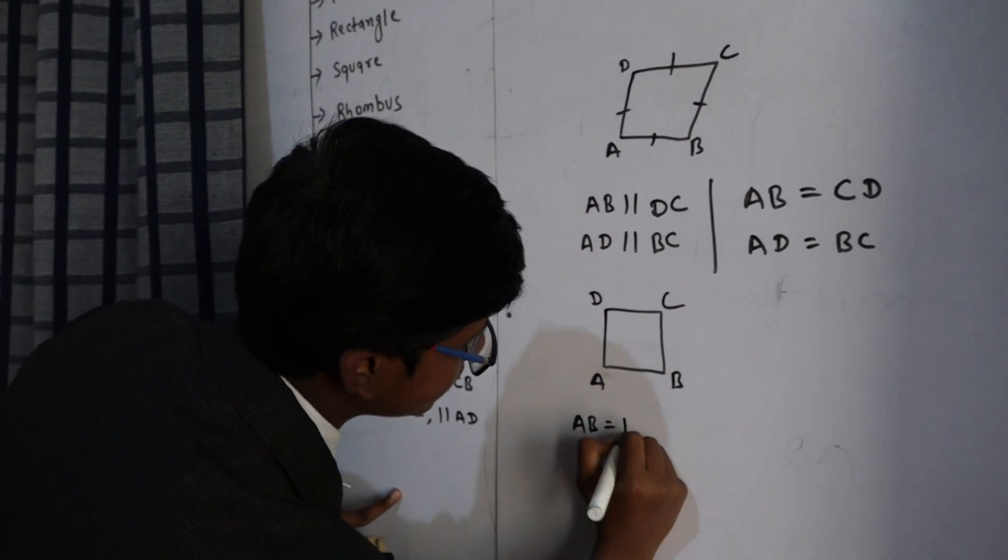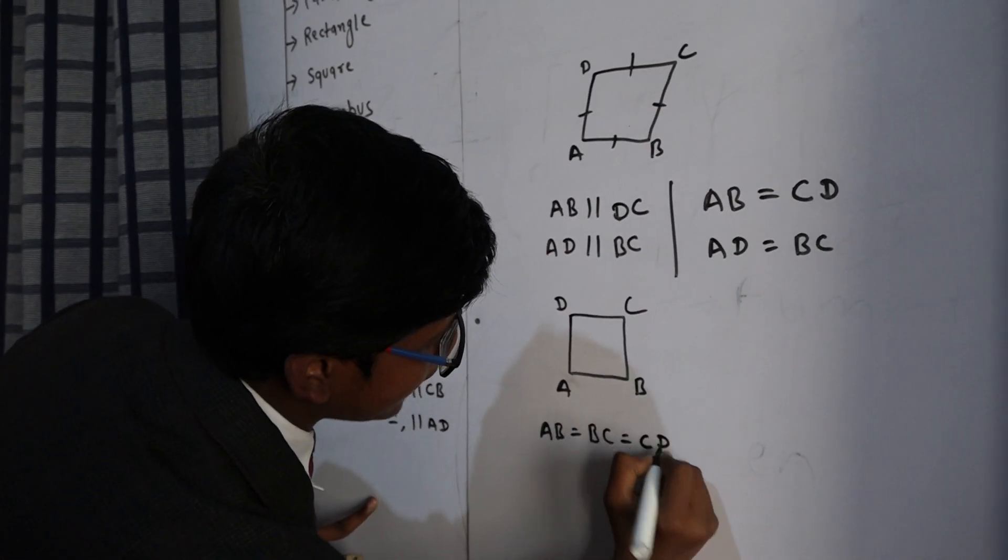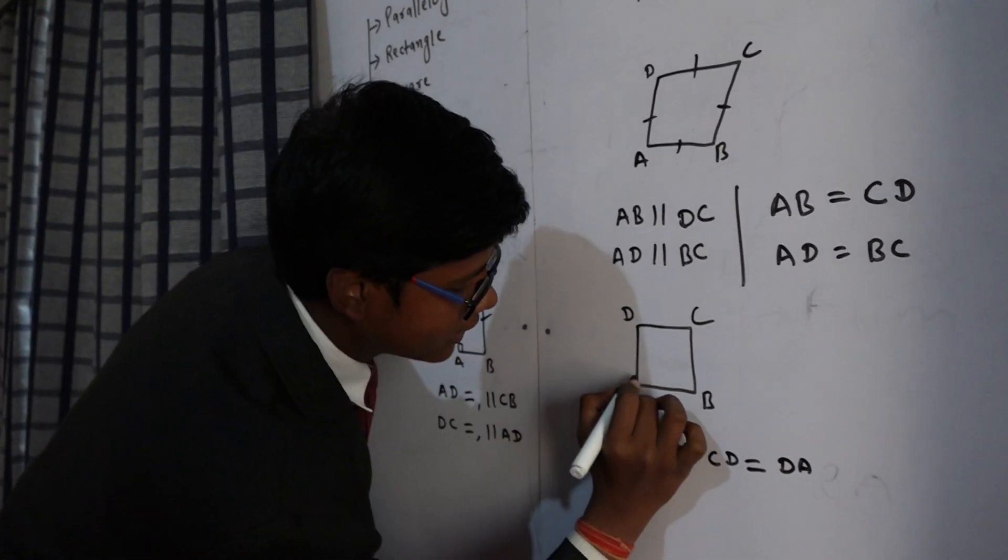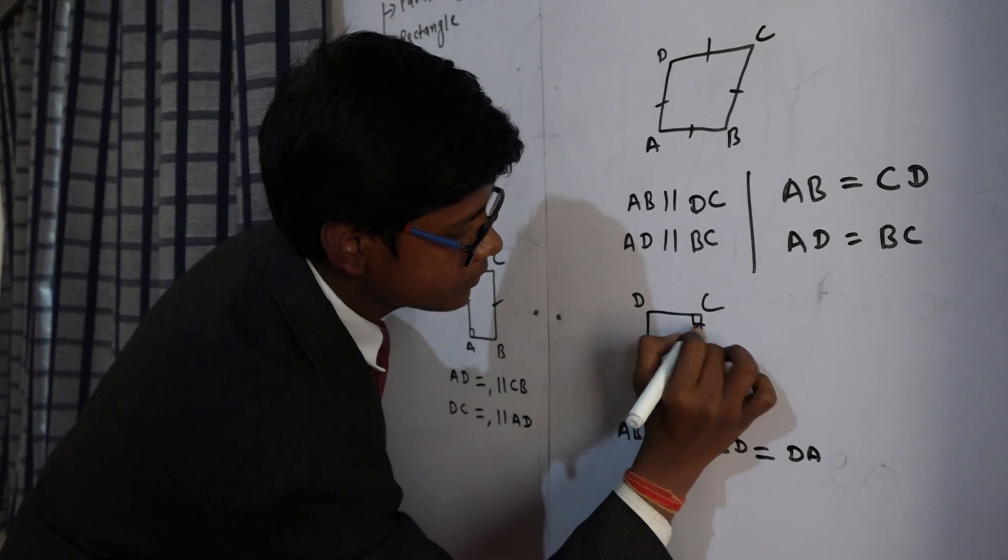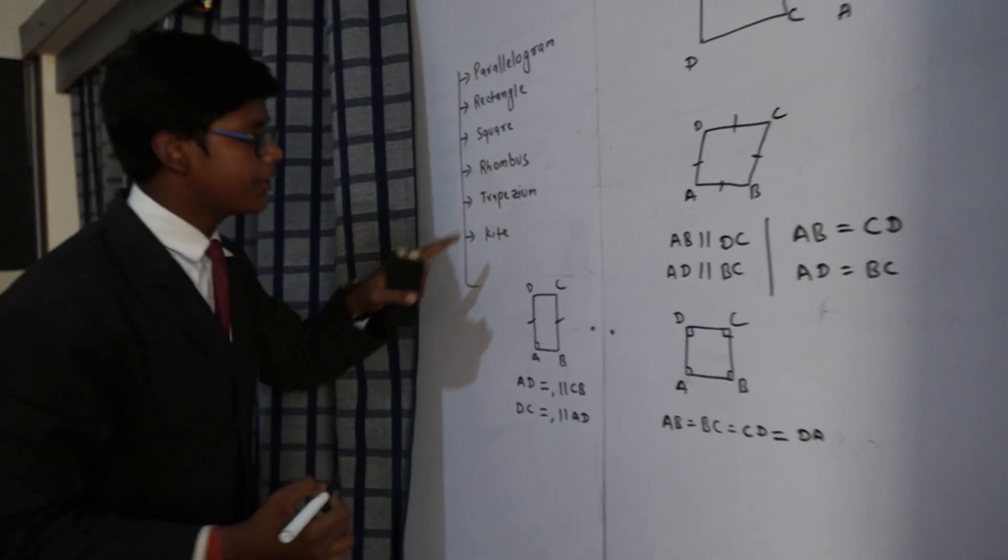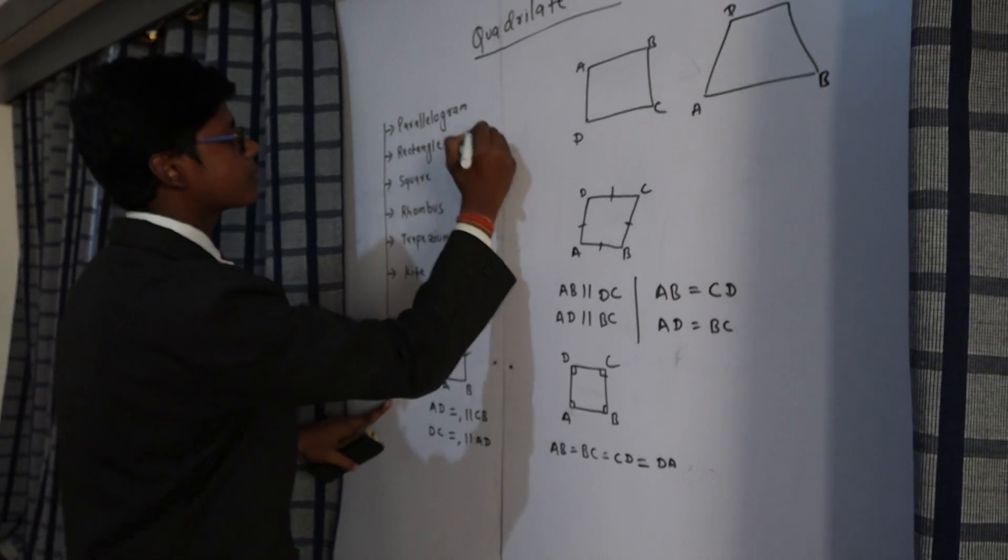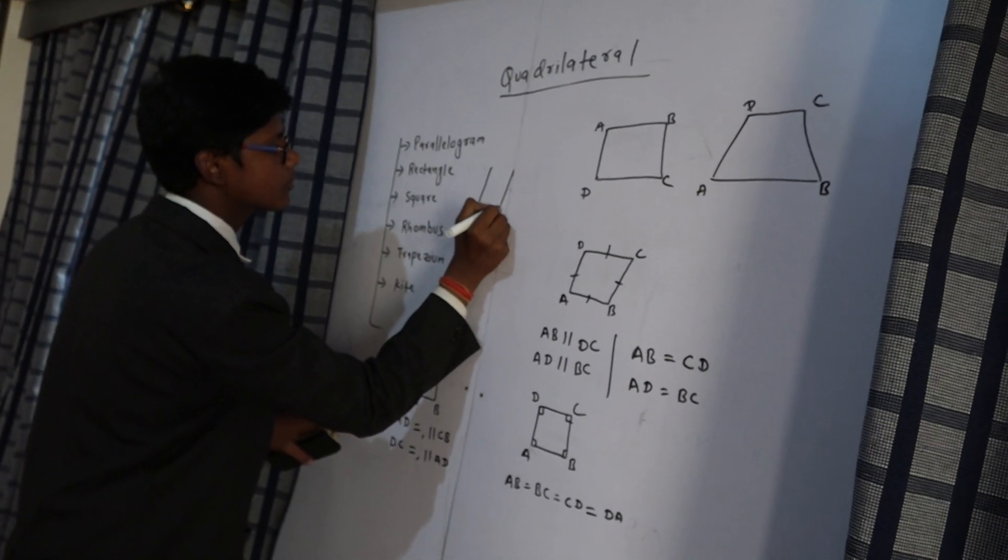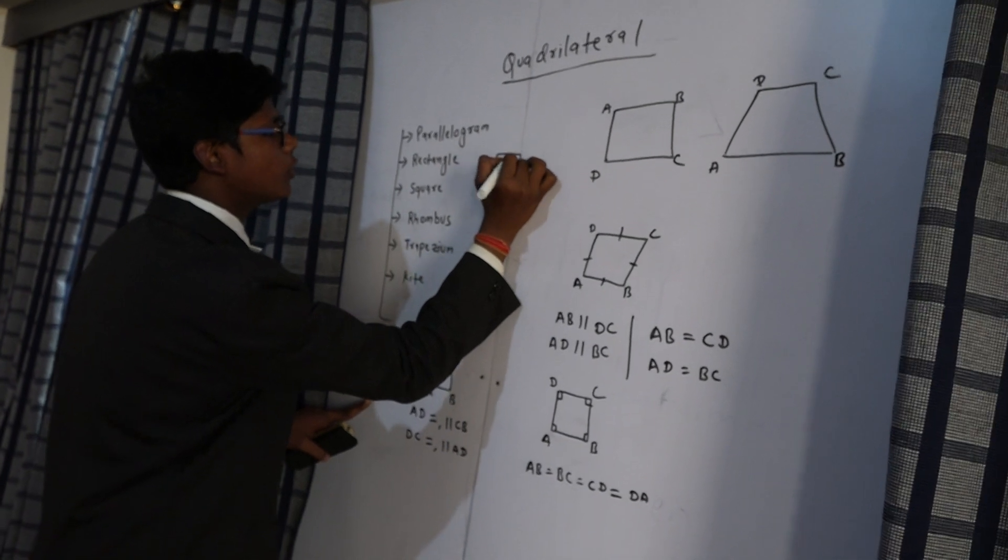AB equal to BC equal to CD and equal to DA. It also forms 90 degrees at the edges. Now moving to our next quadrilateral, that is a rhombus. It is also a four-sided bounded figure having four equal sides like the square.